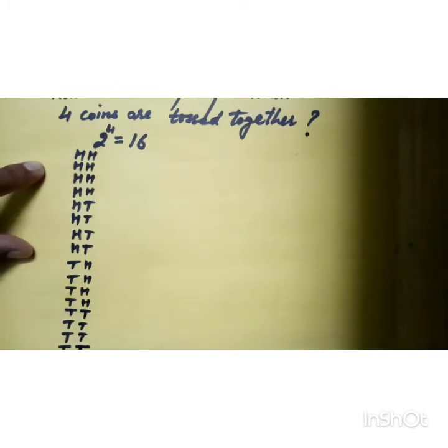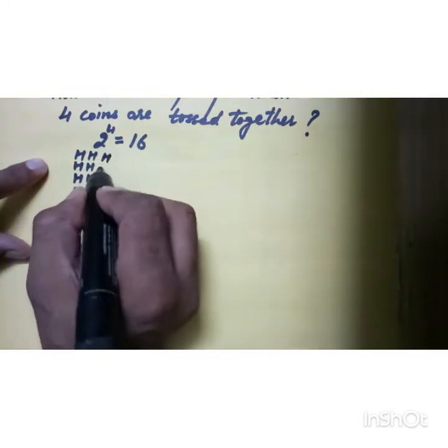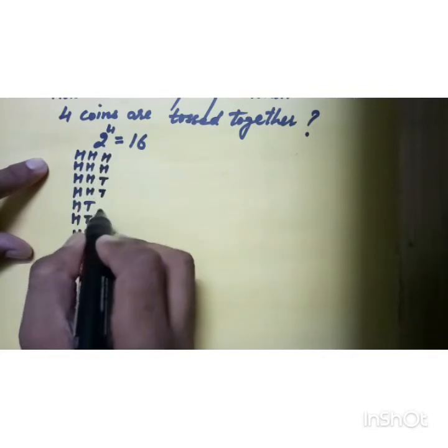Now half of 4 is 2, so we are to write 2 times H, 2 times T, 2 times H, 2 times T.